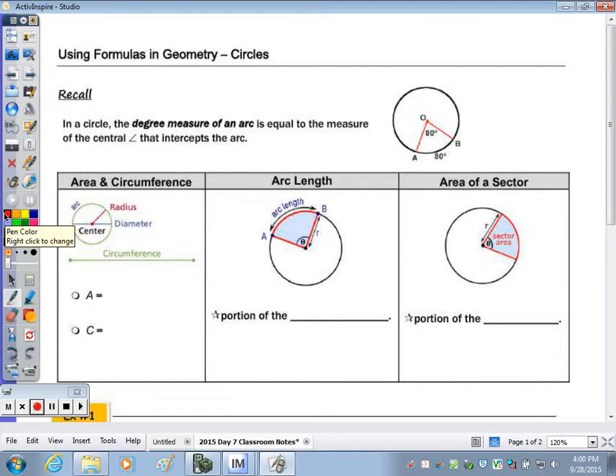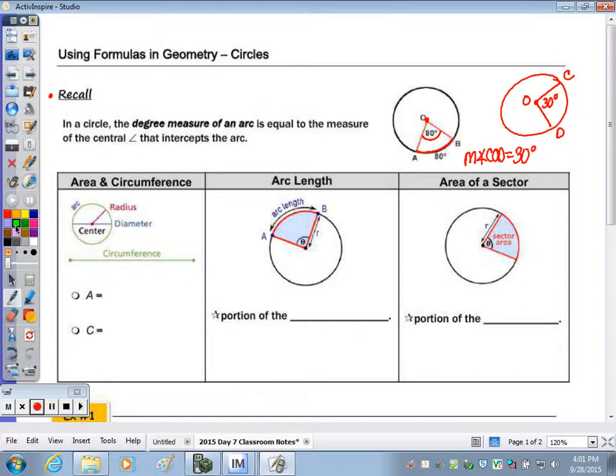So I want you to recall from last class that in a circle, the degree measure of an arc is equivalent to the measure of the central angle of the arc. So in this example here, if this central angle, the vertex is at the center is 80, then arc AB is also 80 degrees. Another example, if I have a circle with a central angle of say 30 degrees, and I'll call this CD, we'll call this O, the measure of angle COD is equal to 30 degrees. But what is also equal to 30 degrees is this arc CD. So that's equal to the measure of arc CD. So you put the two letters with the arc over the top. They're both equal to 30 degrees.